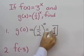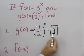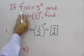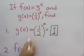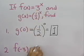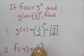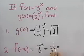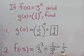So g of 0 turns out to be 1. Let's find f of negative 3. I'll do that by going to the function f and substituting negative 3 for x. So I'll have 3 raised to the negative 3 power. That's going to be 1 over 3 to the positive 3 power, and 3 to the third power is 27, so that would be 1 over 27.